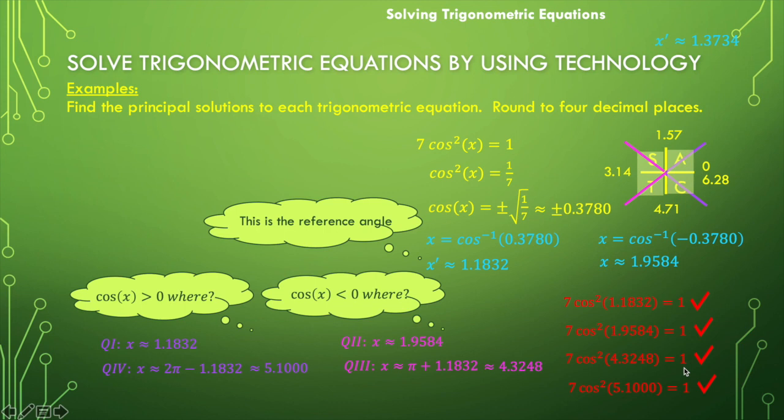The last example I'm going to leave for you to do on your own. But I am going to give you the solution so you can check your work. These are the solutions for 5 times the sine squared of x is equal to 3. The first quadrant solution is 0.8867. The second quadrant solution is 2.2549. The third quadrant solution is 4.0283. And the fourth quadrant solution is 5.3965.